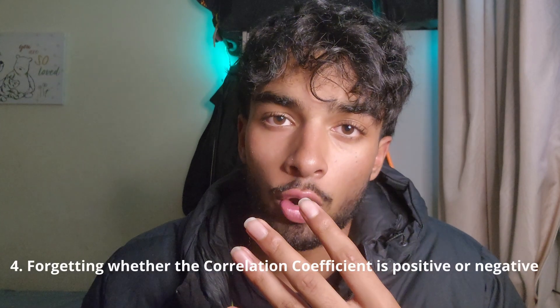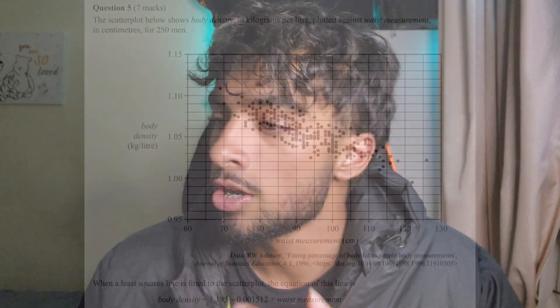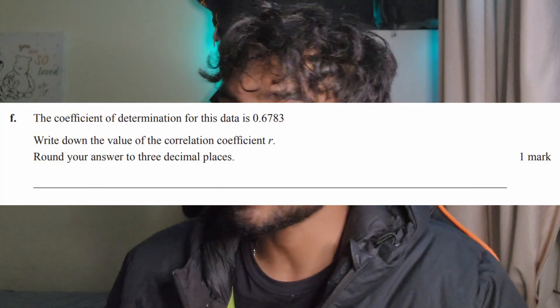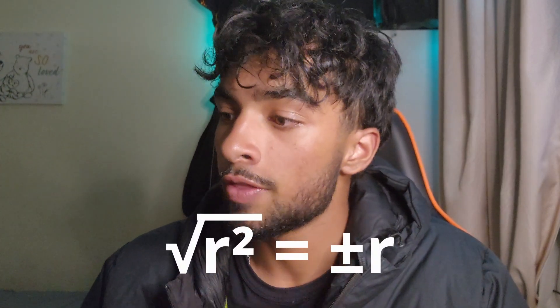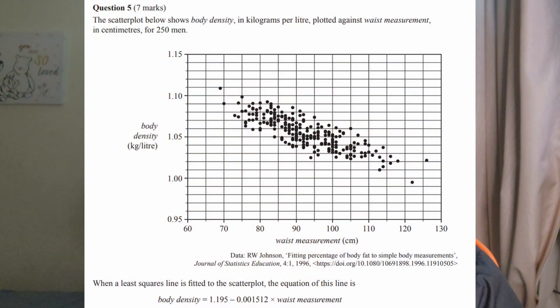Mistake number 4: forgetting whether the correlation coefficient was positive or negative. I've seen this question in many past exams where it gives you the least squares regression line or the graph, and then gives you the coefficient of determination, and asks what the correlation coefficient is. Remember, when we're square-rooting the coefficient of determination, the correlation coefficient could be positive or negative — but if we look at the gradient of the line, it has to be negative in this example. So do not forget to add in your negative sign, or if it's positive, to leave it.